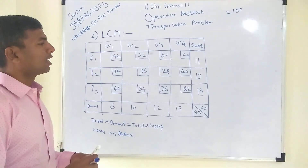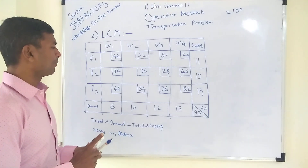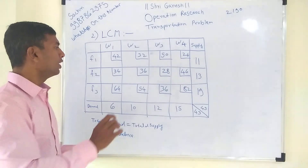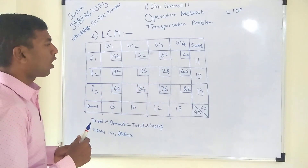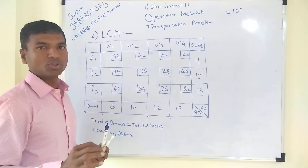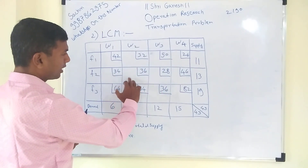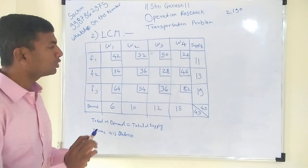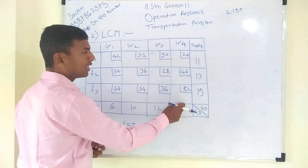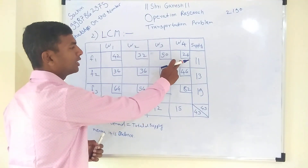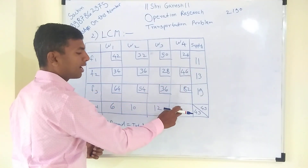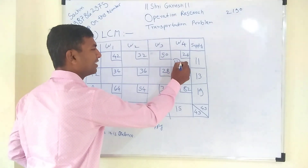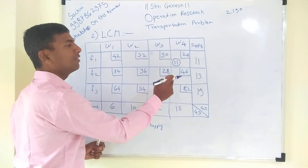Now we perform the next step. Looking at the given cost matrix — don't think about supply and demand yet — we choose the least (smallest) value. Out of all the given costs, 26 is the least cost. Once you select the least cost, check the supply and demand of that particular cell. The supply for the cell with cost 26 is 11 and the demand is 15. Since 11 is smaller, we allocate 11.